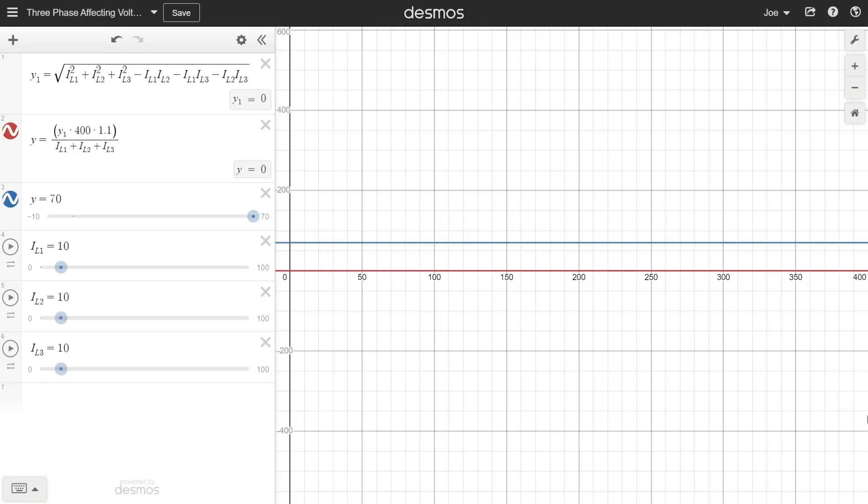And you can see it doesn't matter what those values are as long as they're the same—we've got zero volts between the body of the car and the literal earth. And that makes sense because if all the currents are the same in each phase then the neutral current is zero, and when you multiply and divide zero the answer is always zero.